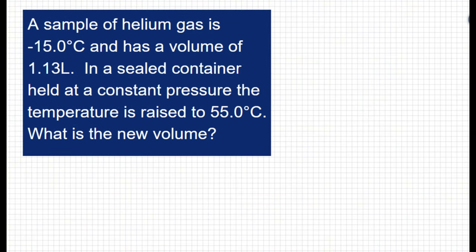Whenever you see degrees Celsius in this unit, you need to have it in Kelvin. So let's start there before we do Charles' law. So I have negative 15 degrees Celsius, and I'm going to convert that to Kelvin by adding 273. And that gives me 258 Kelvin. That's going to be T1. And then at the end, it goes to 55 degrees Celsius. And if I add 273 to that, I get 328 Kelvin. That's going to be my T2.